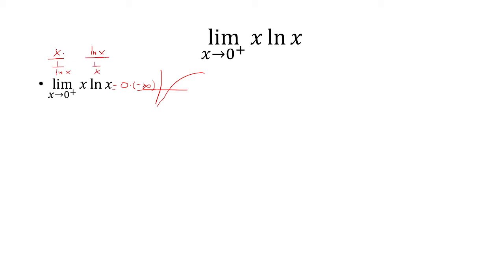Because if we have x over 1 over ln of x, this becomes 0 over 0. If it's ln of x over 1 over x, this becomes negative infinity over positive infinity. So it's better to do the second one here because we're going to end up using L'Hopital's rule, and it's better to take L'Hopital's rule of 1 over x versus 1 over ln of x.